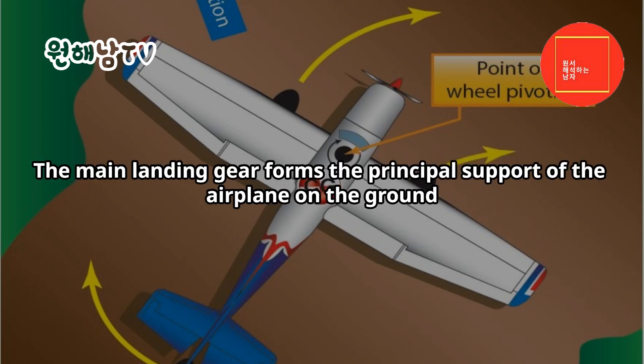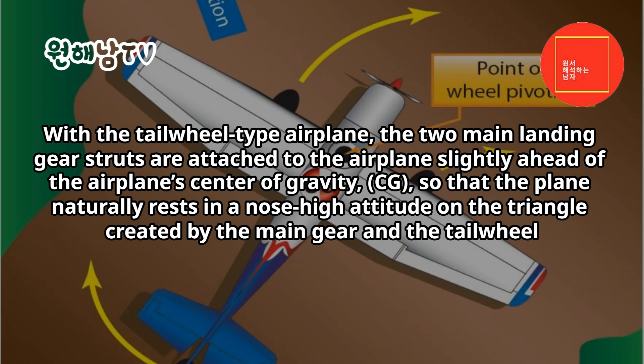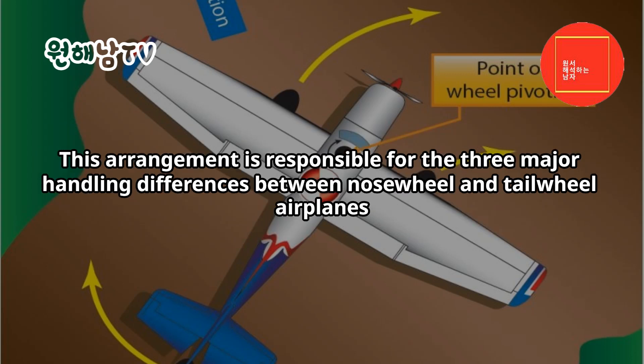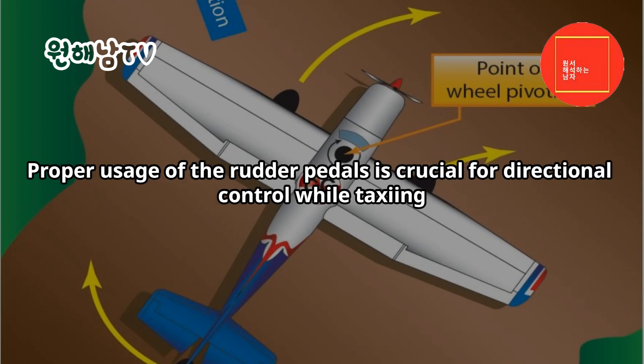The main landing gear forms the principal support of the airplane on the ground. The tailwheel also supports the airplane, but steering and directional control are its primary functions. With the tailwheel type airplane, the two main landing gear struts are attached slightly ahead of the airplane's center of gravity (CG), so the plane naturally rests in a nose-high attitude on the triangle created by the main gear and the tailwheel. This arrangement is responsible for three major handling differences between nosewheel and tailwheel airplanes, centering on directional instability, angle of attack (AOA), and crosswind weather-veining tendencies.